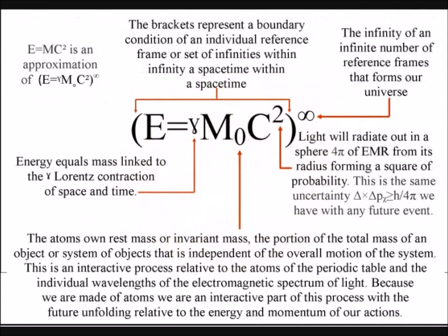All we have to do is place the Lorentz contraction of space and time between the energy and mass. The greater the energy, the greater the contraction of space and the slower time will run. Mass will increase relative to this and each reference frame can be seen as a vortex in space and time.